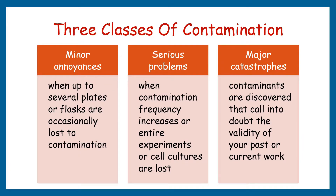Culture contaminants may be biological or chemical, seen or unseen, destructive or seemingly benign, but in all cases they adversely affect both the use of your cell cultures and the quality of your research. Contamination problems can be divided into three classes. First is minor annoyances, where your cultures are occasionally lost due to contamination. Secondly, serious problems, where your entire culture is lost due to increased frequency of contamination.